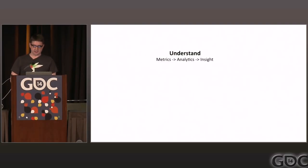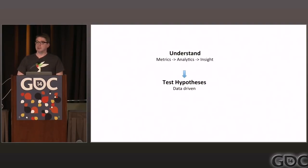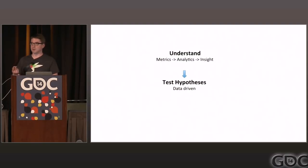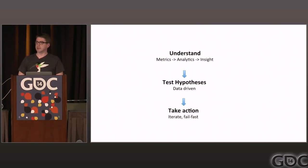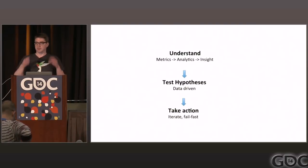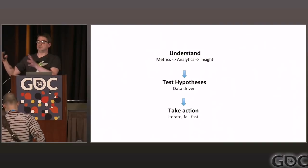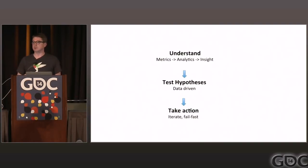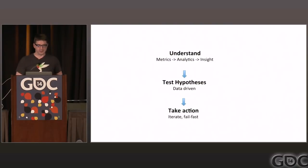You need to understand what users are doing — that's about analytics and getting data in. You need an ability to test hypotheses against your users: try things out, see what works and what doesn't, and use a data-driven approach to making decisions. And finally, you need a way to act on the data — push out content, lock in changes, or adapt the game service very rapidly. This promotes the idea of a data-driven layer on your game, which we know well in the industry in terms of separating tools from runtimes.